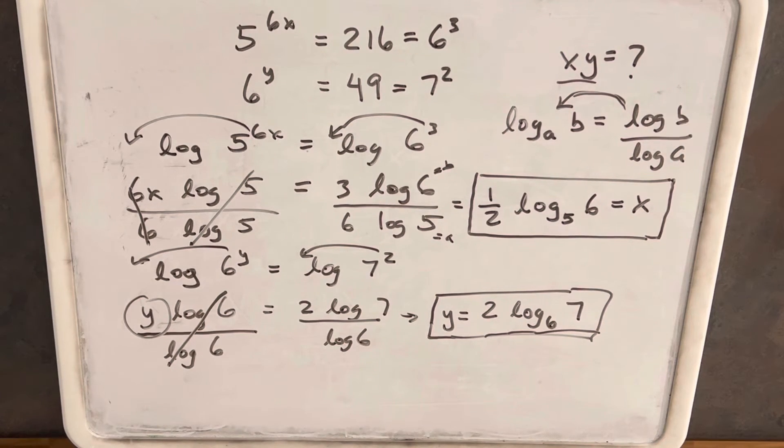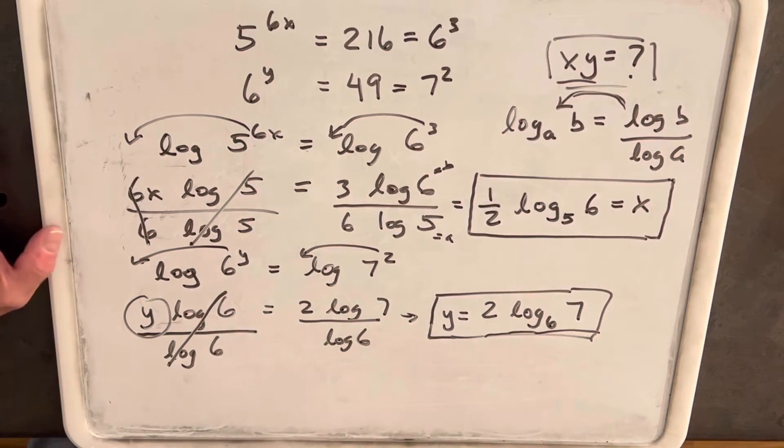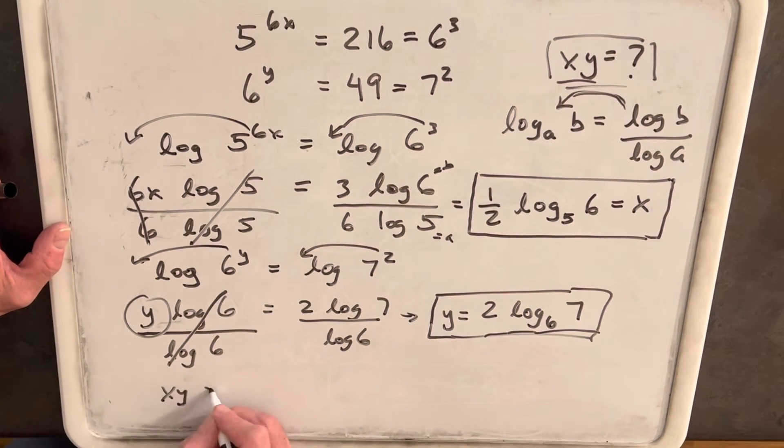But the one thing is, okay, we need to solve for xy, not x or y. So for xy, we're just going to multiply these together.